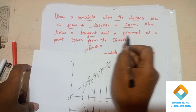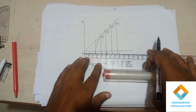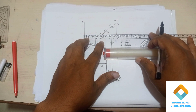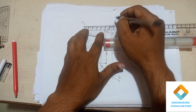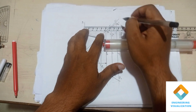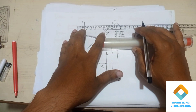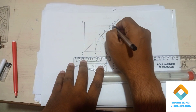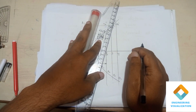Now we have to construct the tangent and normal as per the question. Draw a tangent and normal at a point 70mm from the directrix. Take the ruler scale, measure 70mm (7 centimeters), move vertically upward, and exactly where it touches the parabola mark a point. Label this point as E. Show the distance of 70mm. Now connect point F and point E with a straight line.